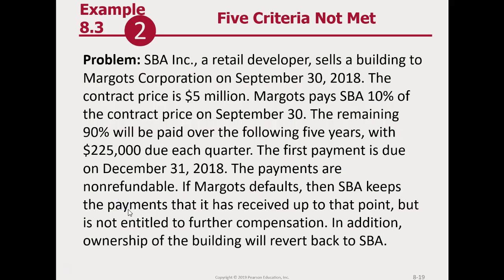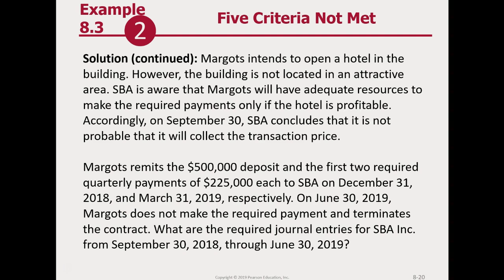We have a real estate developer selling a building to a corporation. The contract price is five million dollars. They're going to pay a 10% down payment and then do remaining installments over the next five years. The payments are non-refundable, and if the other company defaults, the seller keeps the payments and keeps the building. The customer is intending to open a hotel, but they picked a poor location. The selling company is aware that if the hotel is not profitable, they probably can't pay back. So on the day they enter the contract, they don't meet the probable collection criteria and cannot call it revenue.